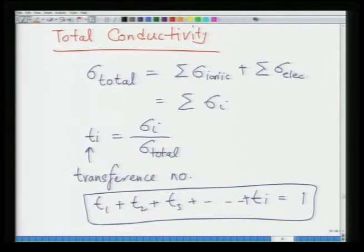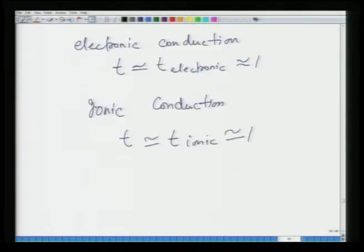In the extrinsic region conductivity is governed by the concentration of impurities, and in the intrinsic region it is governed by intrinsic defects. We then looked at the transference number, which is the ratio of ionic or electronic conductivity to the total conductivity. For a perfect ionic conductor, T_ionic = 1, and for perfect electronic conduction, T_electronic ≈ 1.